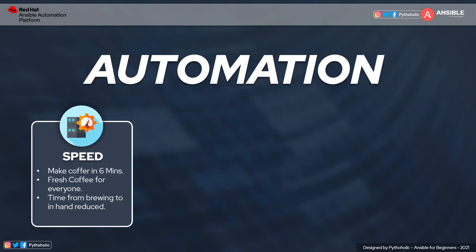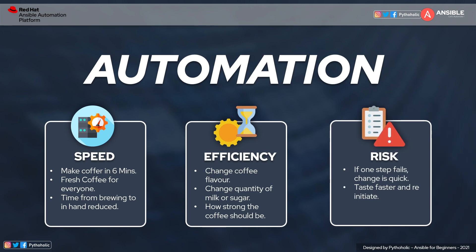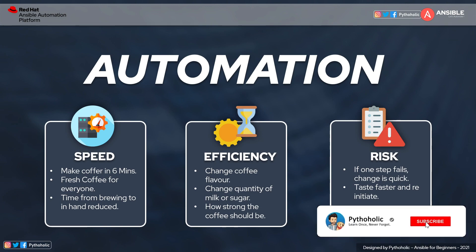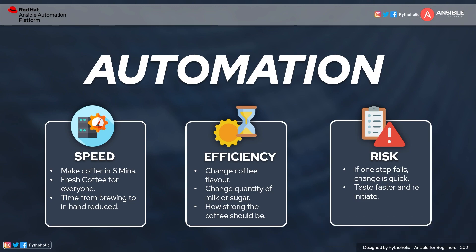So what did we understand here? With automation, we are not necessarily reinventing the wheel. When Jenny felt the need for automation, she didn't just save time — she was able to achieve much more. With automation, she increased the speed of processing the product, saving up to 75% of the overall time. She made the process more efficient, could change the flavors on the go — adjusting milk, sugar, or coffee strength — and had much more control over risk factors. If there's a problem with any individual component, she can change it and it will be up and running in no time. If we translate this analogy to IT infrastructure or application deployment, just imagine how much impact it would make.